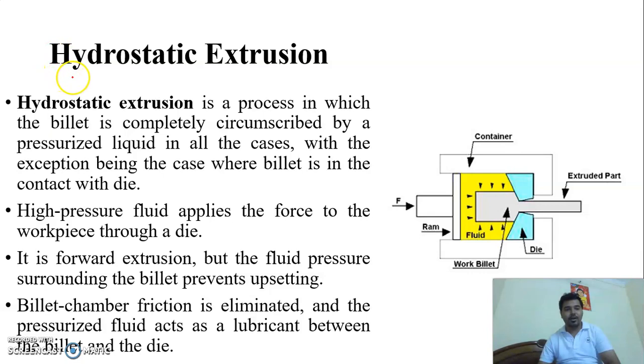This is a type of Cold Extrusion process, which is a forward Extrusion process, which is Hydrostatic Extrusion. Hydrostatic Extrusion is very important process for Extrusion. What is this? Hydrostatic Extrusion is a process in which the billet is completely circumscribed by the pressurized liquid, in all cases, with the exception being the case where the billet is in contact with the die.